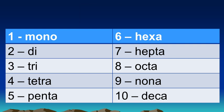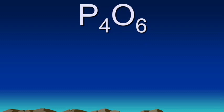Let's try a few examples here today. The first one we have is P4O6. You take the four, and the prefix for four is tetra, so that would be tetraphosphorus.